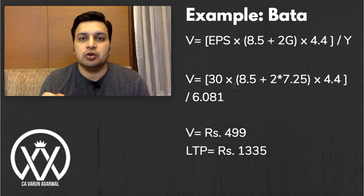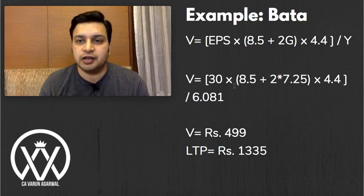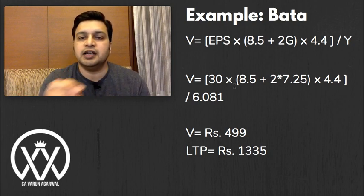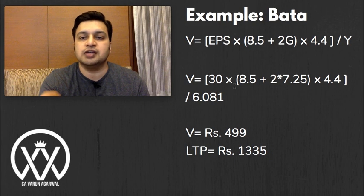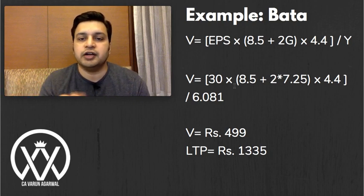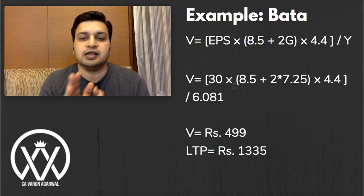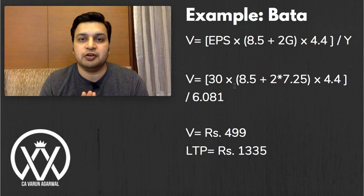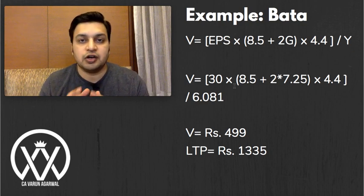Filling in the formula: V = 30 × (8.5 + 2 × 7.25) × 4.4 / 6.081. You are multiplying three numbers and dividing by one: EPS = 30, the PE component = 8.5 + 2 × 7.25 = 23, and the constant 4.4 — then dividing by bond yield 6.081. Doing this calculation gives the intrinsic value of BATA as around 500 rupees. The current share market price is about 1,335 rupees. This gives you an idea of whether you are investing at the right price, whether to wait for a downfall, or whether the company's growth will raise the intrinsic value.